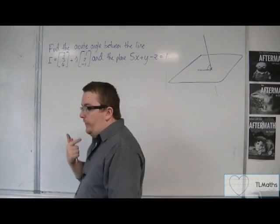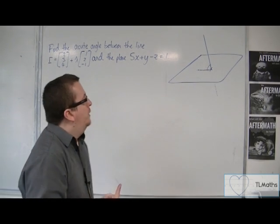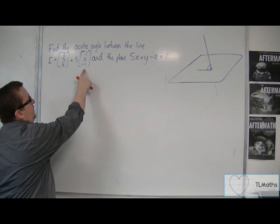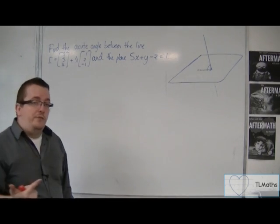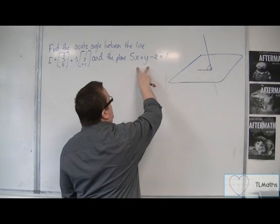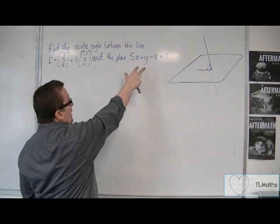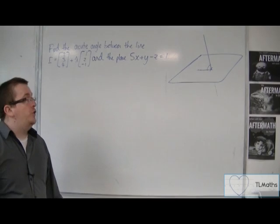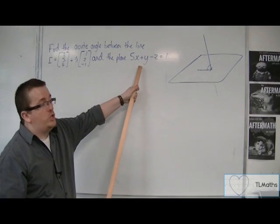Now, let's think about what information I have. I have the direction of the line, and I have the normal vector to the plane. I can read off the normal vector as 5, 1, minus 1, the coefficients of the equation of the plane.